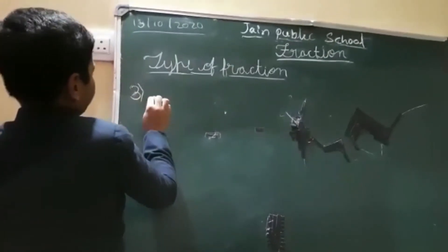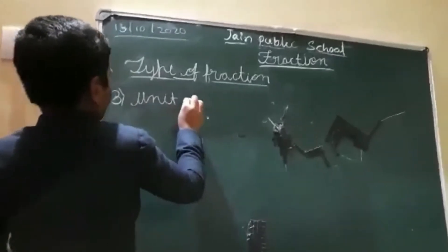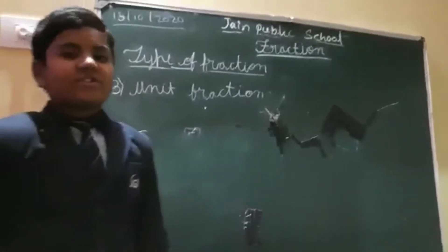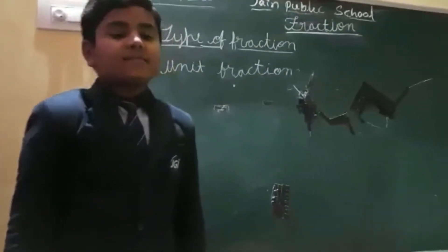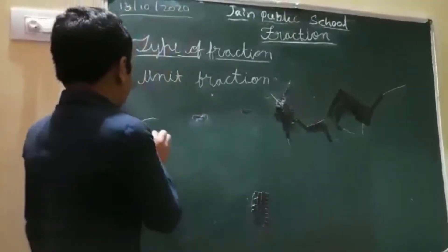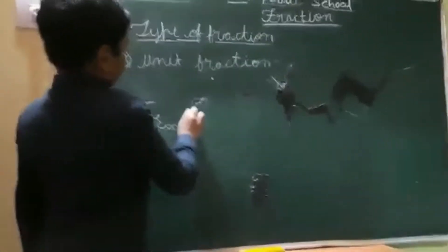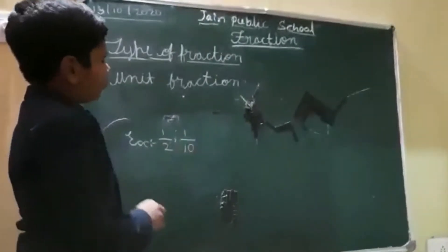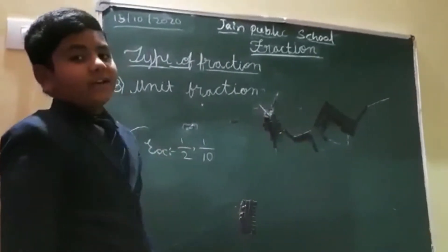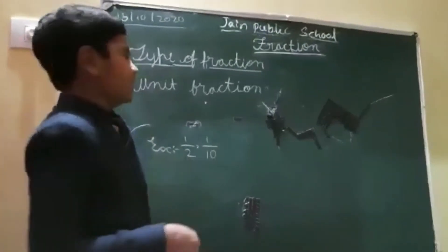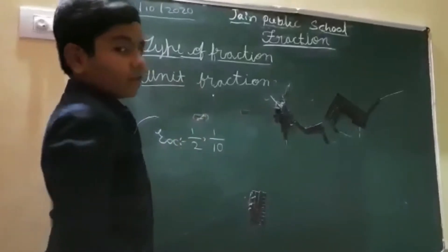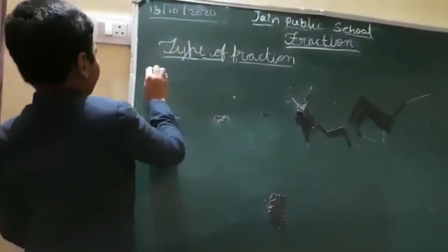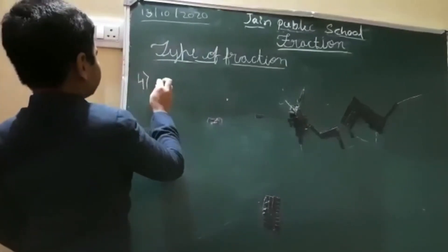Third one is unit fraction. A fraction in which the numerator is 1 is called a unit fraction. For example, 1 by 10. The numerator is 1, so it is called a unit fraction. In the denominator you can take any number, but the numerator should be 1 only.